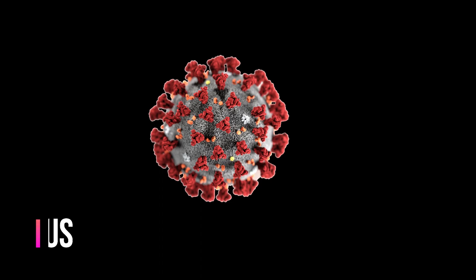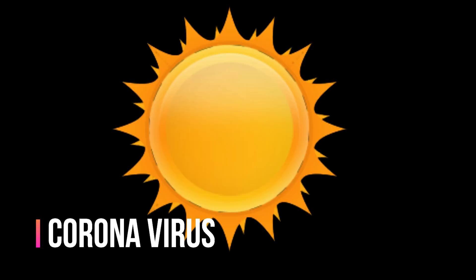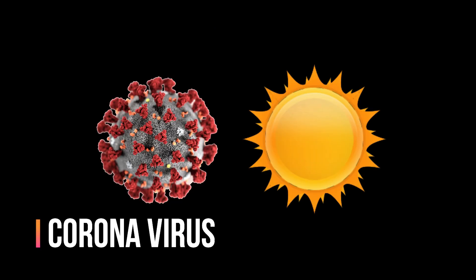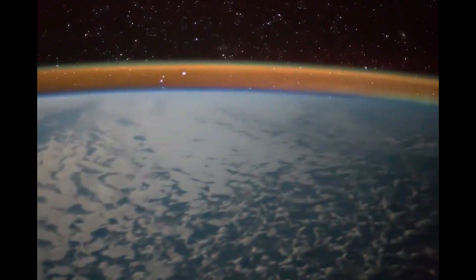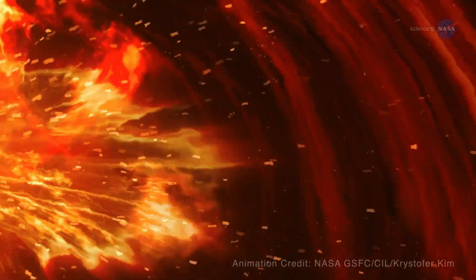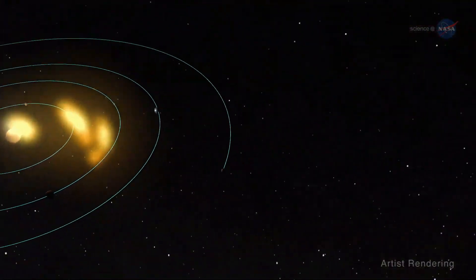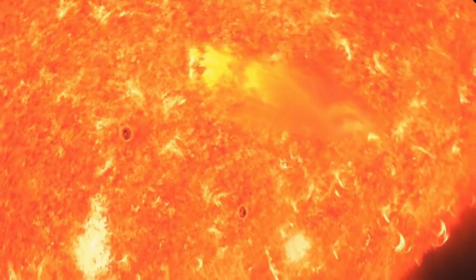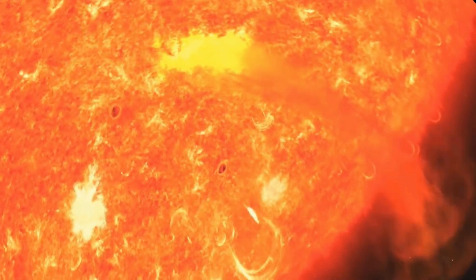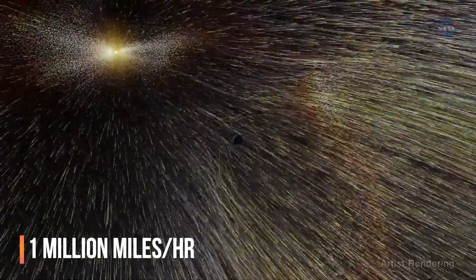The corona is the outer structure of the sun, and this is the interconnection of the corona. This plasma forms a solar wind. The solar wind is a highly charged particle stream. It escapes the sun's gravity and travels at about 1 million miles per hour.